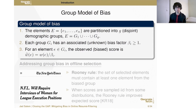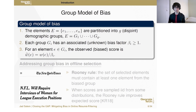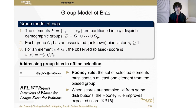In the group model of bias, elements are partitioned into G disjoint demographic groups. Each group has some unknown bias factor, and the scores observed by the algorithm are just the true score of the applicant divided by their group's bias factor. This model was studied by Kleinberg and Raghavan in the offline selection setting, where they can see the entire applicant pool. They showed that a form of affirmative action called the Rooney Rule is effective in improving the expected total score of selected applicants under some parameter choices. Our goal is to achieve a similar result in the online selection case, where you don't have access to all applicants at once.